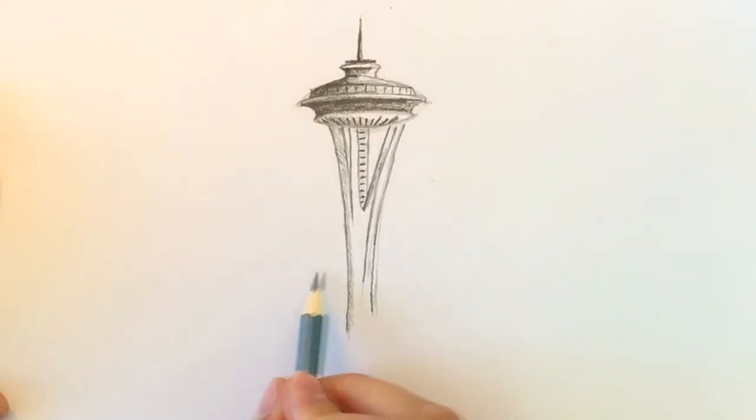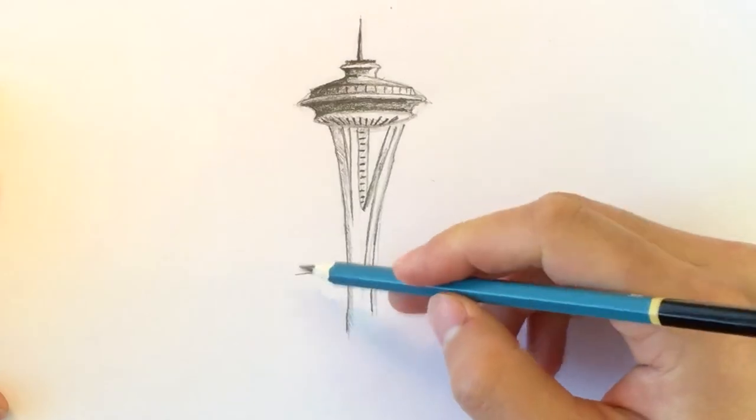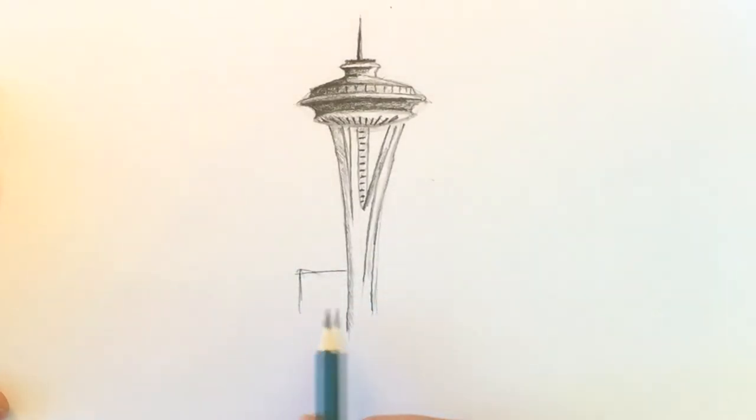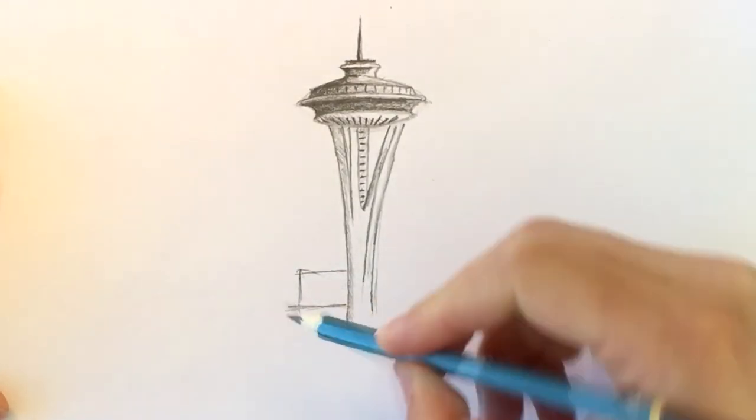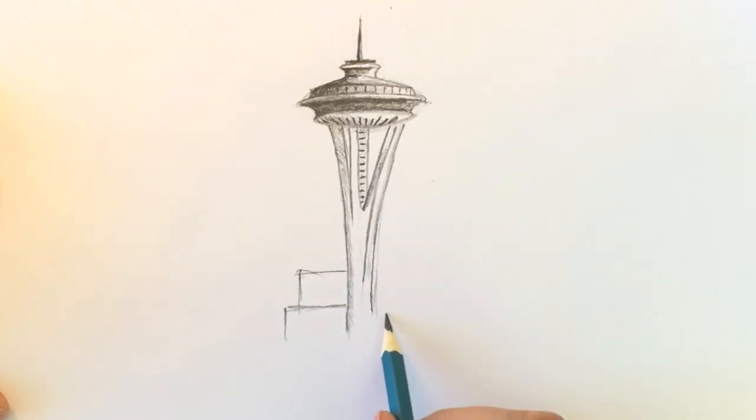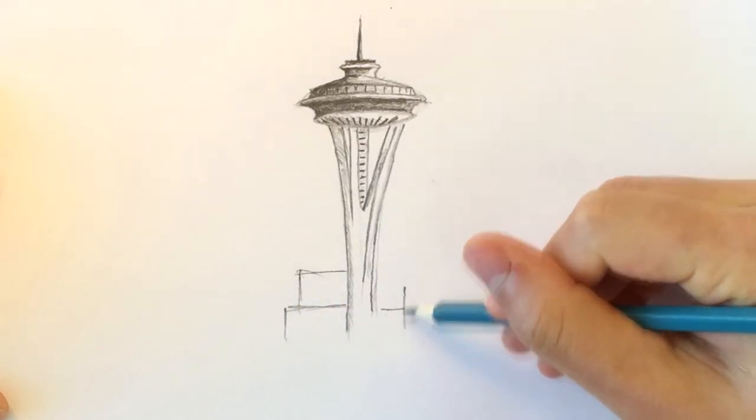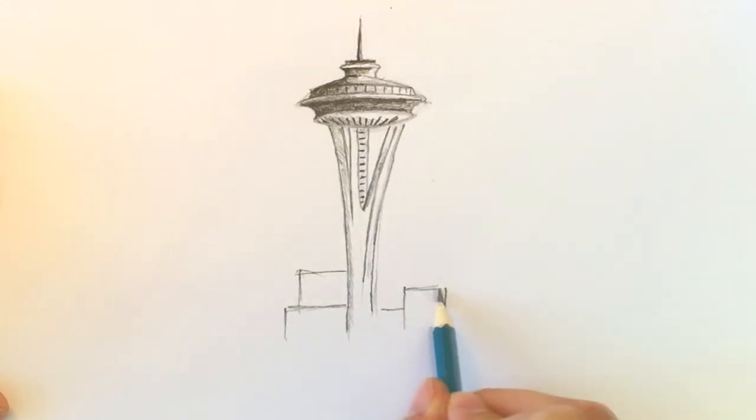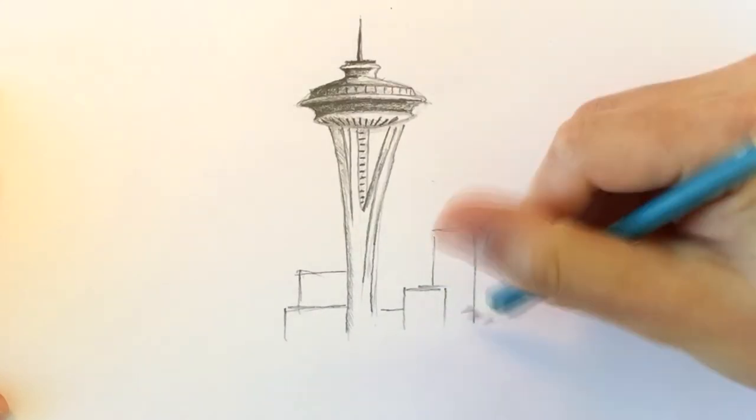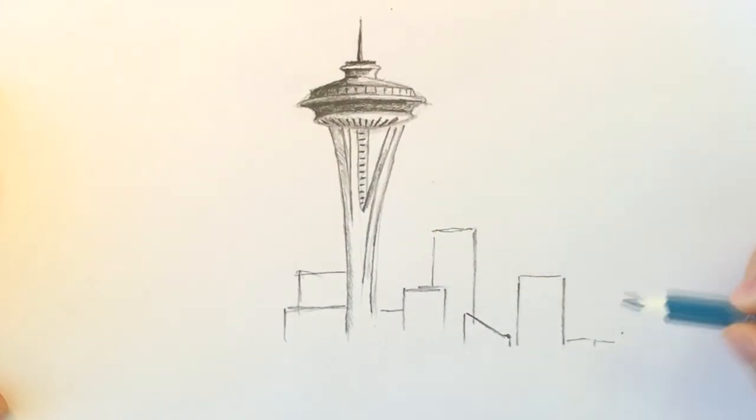And now that we are almost done, I will now simply sketch the skyline of Seattle. I am doing that according to a picture, but you can do your own buildings. You see, just some simple lines, most of them squares and rectangles.